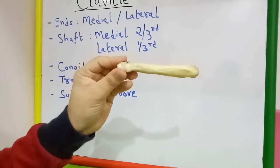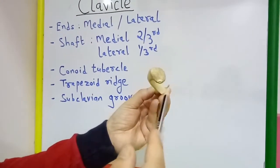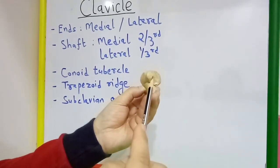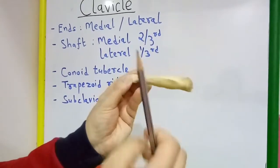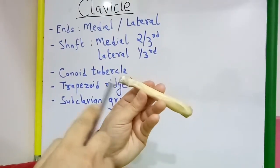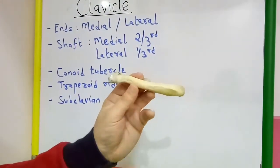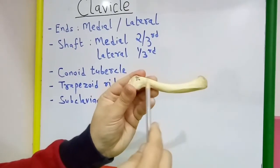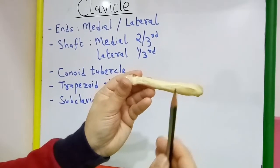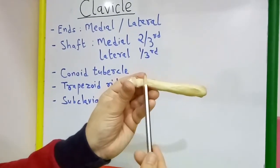This is the right clavicle, in which the larger medial end is placed medially, which will articulate with the manubrium to form the sternoclavicular joint, and the lateral end is flattened, which will articulate with the acromion to form the acromioclavicular joint.